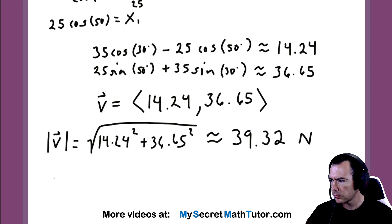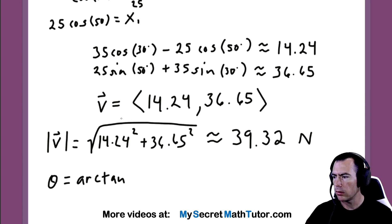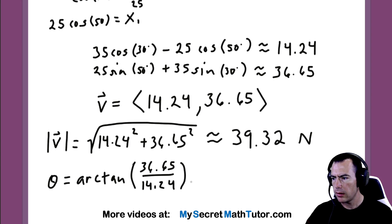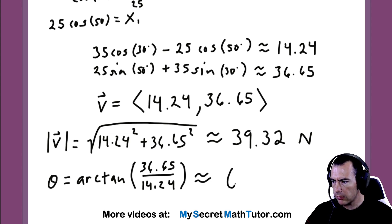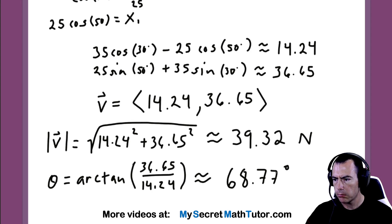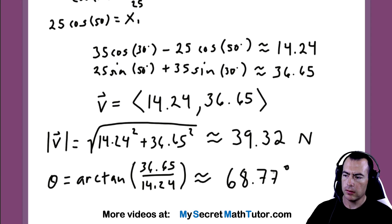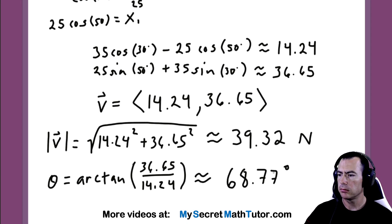We're not done yet — we also need its angle. For the angle, this is where we take the arc tangent of our components. We take the arc tangent of the y value, 36.65, divided by the x component, 14.24, and that will give us our angle in degrees. The angle I'm getting out of this is around 68.77 degrees. That now finishes this one off — we now have its magnitude and the resulting angle. Not too bad. Very nice trigonometry problem.